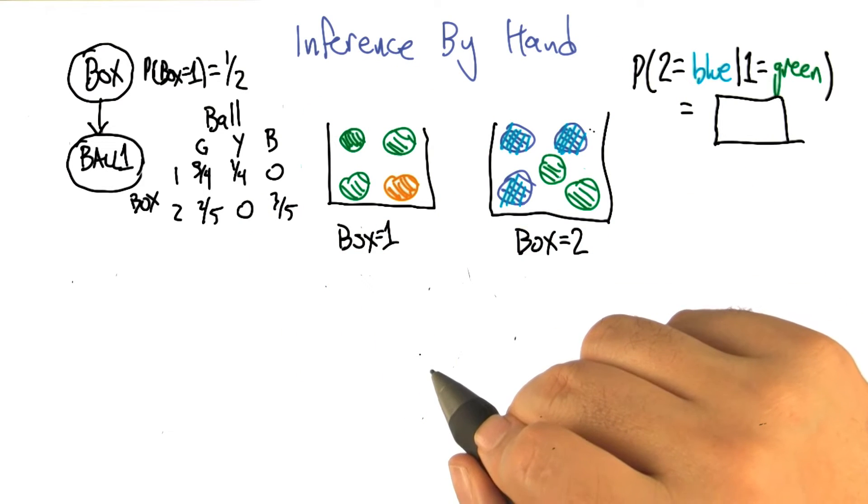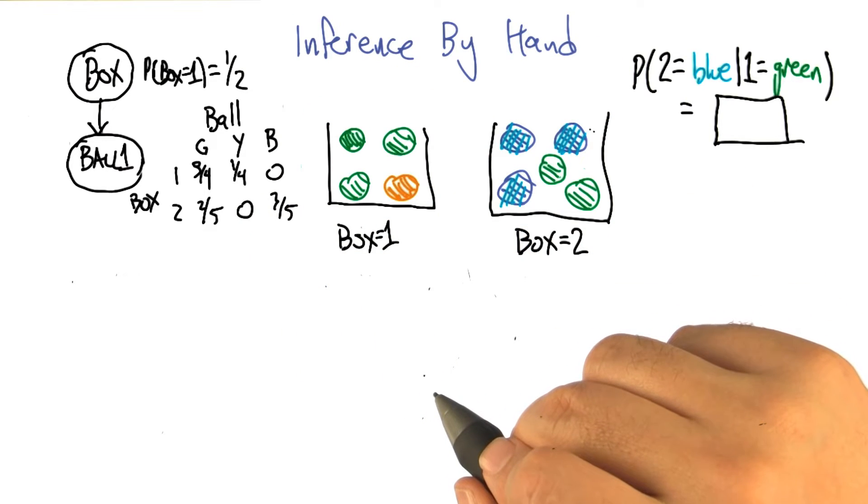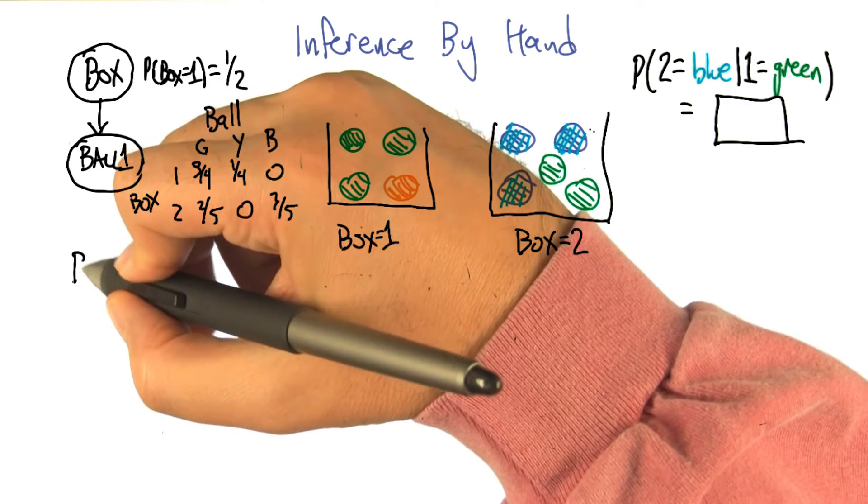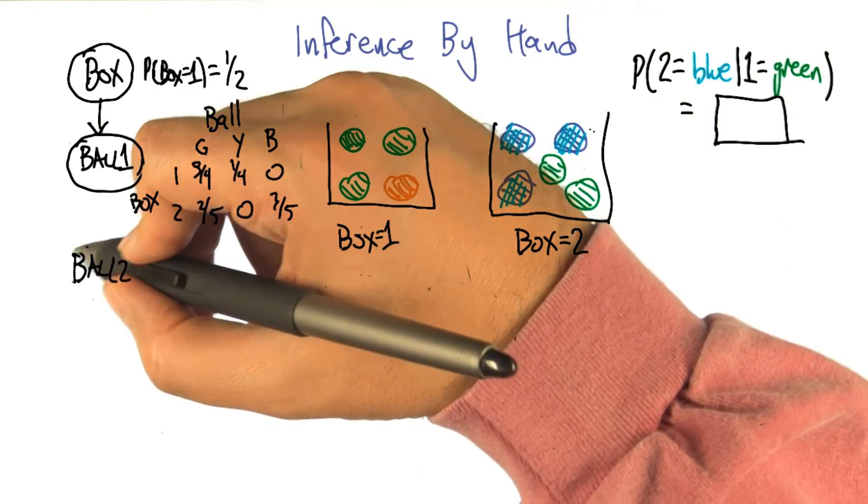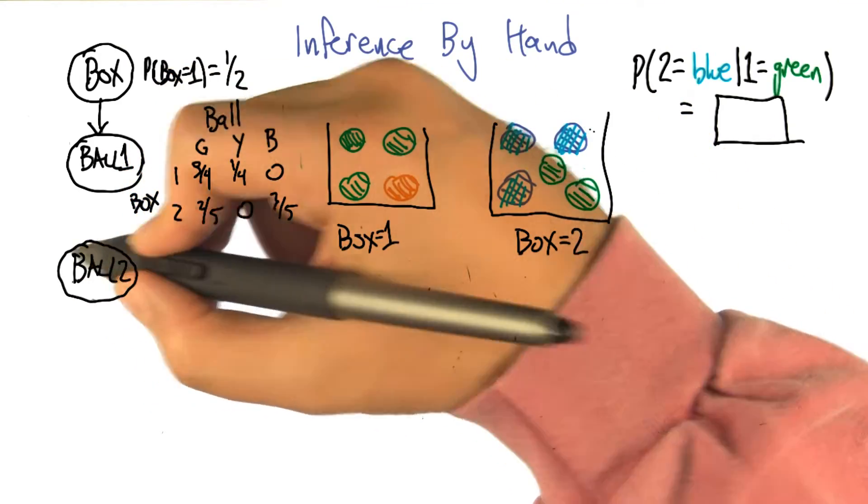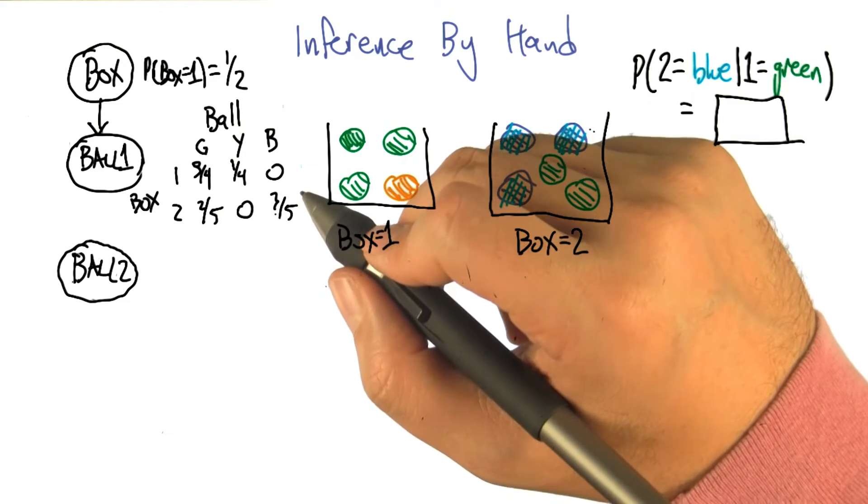So for the second draw, well clearly that sort of depends upon what you drew the first time, because you said we were drawing without replacement. So it definitely depends upon what you drew the first time. But also it still depends upon the box. Okay, so now we've got tables for box, we've got tables for ball one, and we need to know what ball two's going to be.